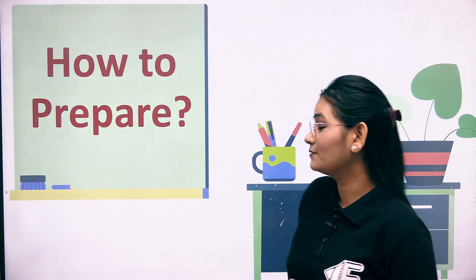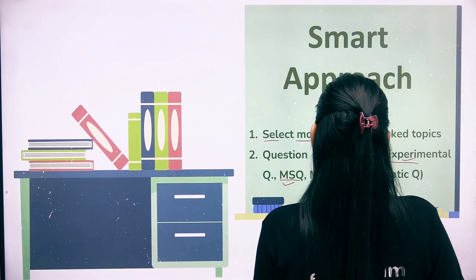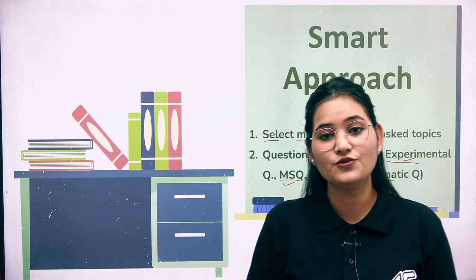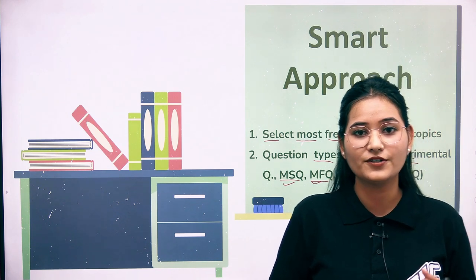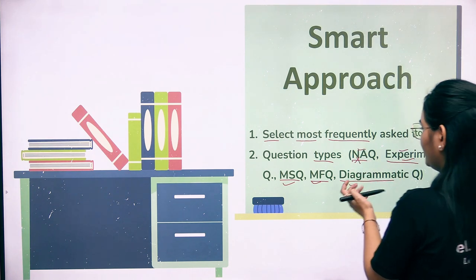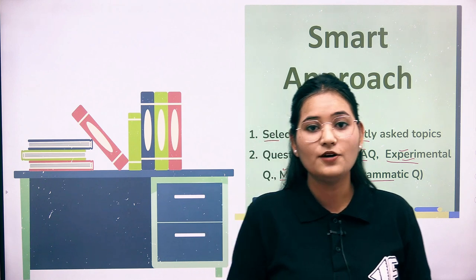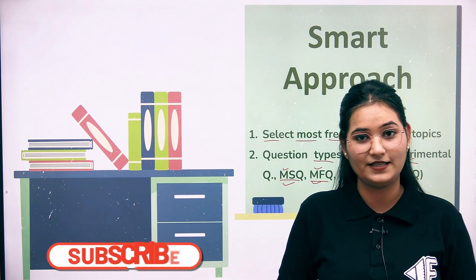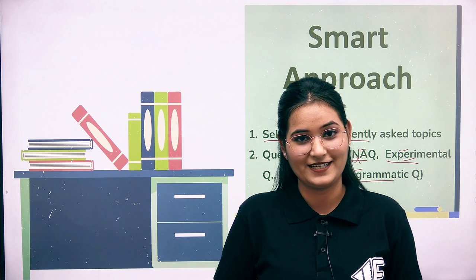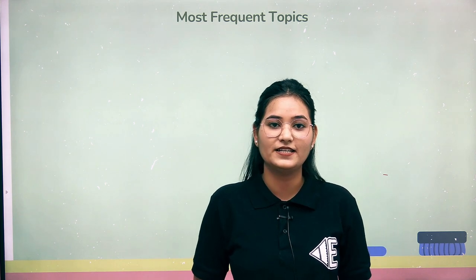To read, revise, and recall all those topics is a little difficult, so we will use a smart approach. In the smart approach, first we select the most frequent topics. After identifying the most frequent topics, we look at question types — such as numerical answer type, experimental questions, multiple statement questions, match the following questions, and diagrammatic questions. In Unit 5, there are more experimental questions, match the following, and diagrammatic questions, so we target these first.